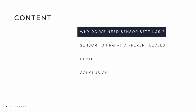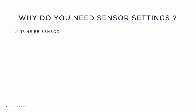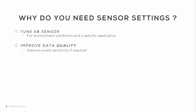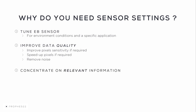Let's start with the first topic and see the need behind these sensor settings. These sensor settings, or biases, allow you to tune the event-based sensor for optimal function in different environmental conditions and for the best performance in specific applications. Tuning your sensor can be used to improve data quality — for example, by improving pixel sensitivity in the case of low contrast objects, speeding up pixels for high speed motion, or removing different types of background noise. Tuning allows you to concentrate on relevant information and only acquire useful data containing objects of interest and their motion, excluding noise.